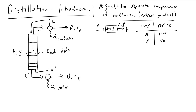We're going to take the effluent stream called F and put it into this distillation column drawn to the left, where it will enter a feed plate. To understand what's going on inside the distillation column, it's best to start at the bottom and then examine what happens as we ascend the column.